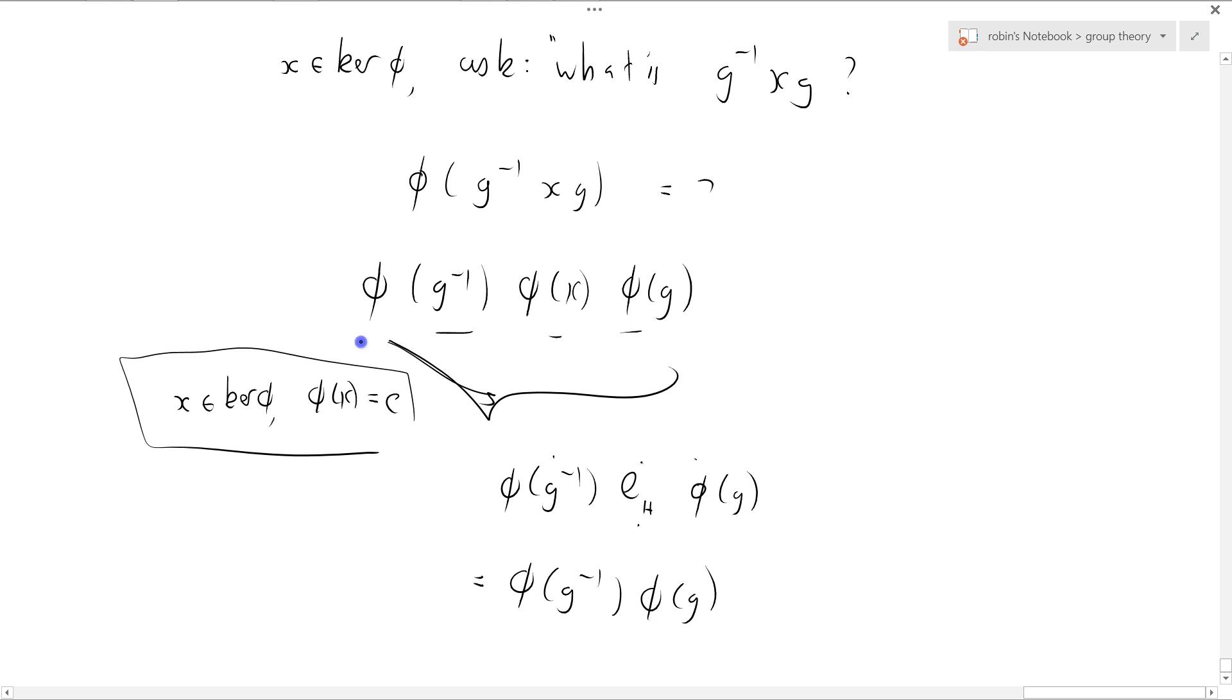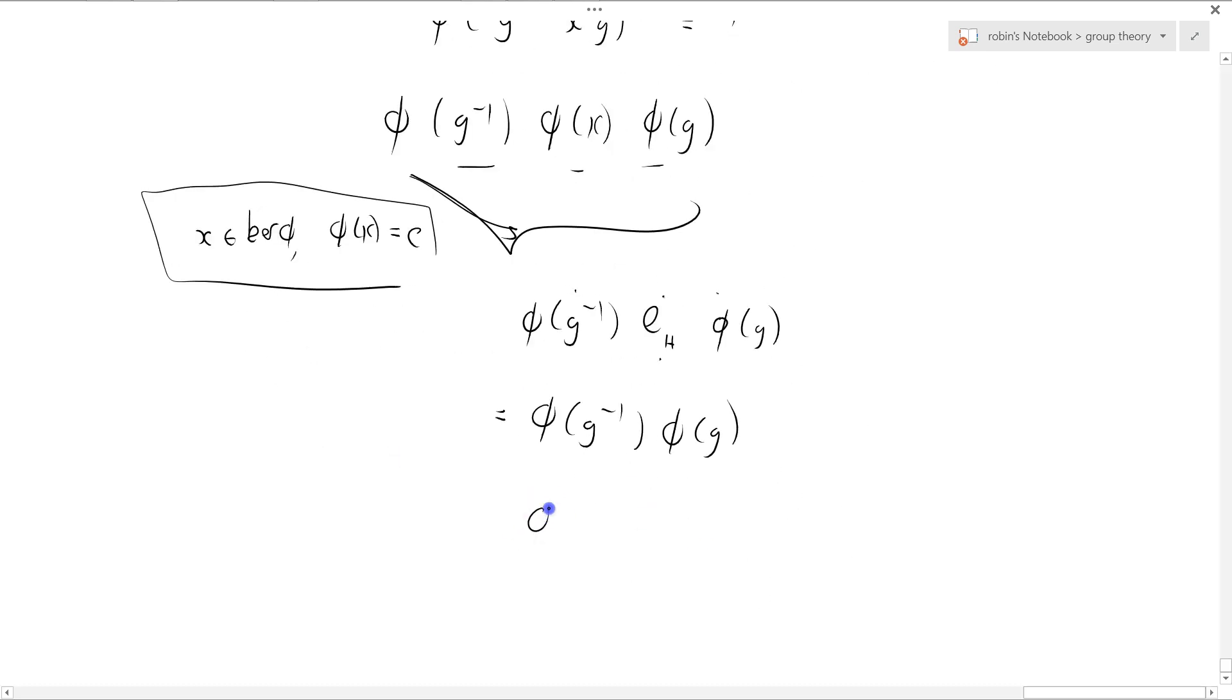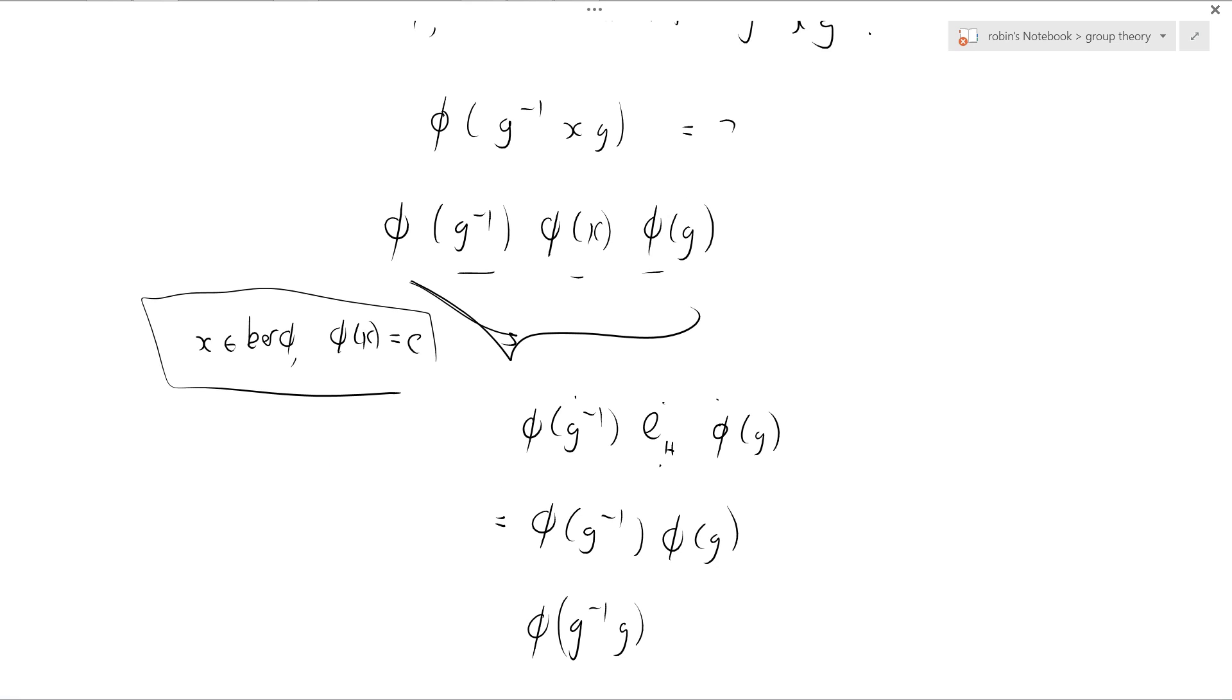And now use the fact that phi is a homomorphism again, which equals phi of E, which equals E. So you see, we're using the homomorphism property of phi three times.